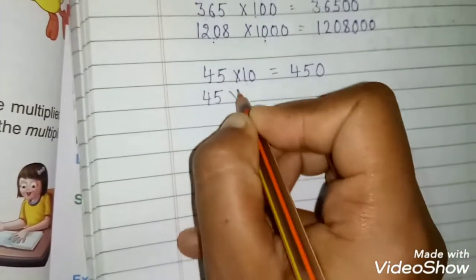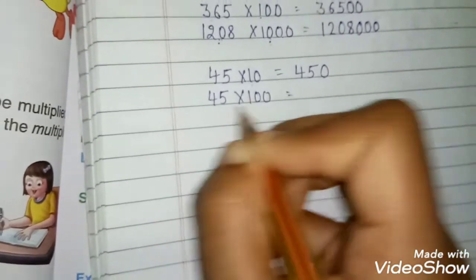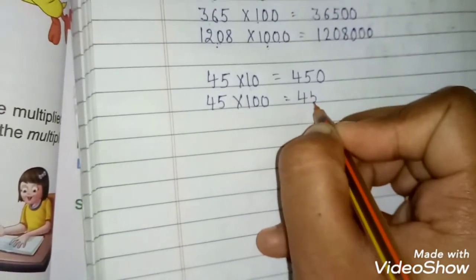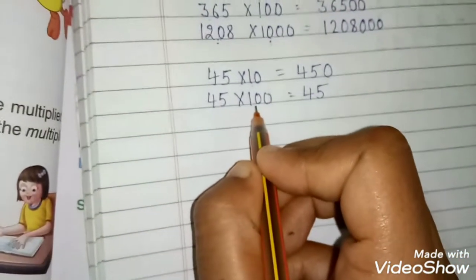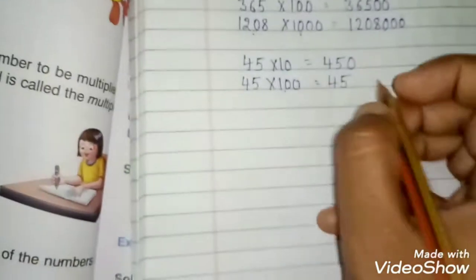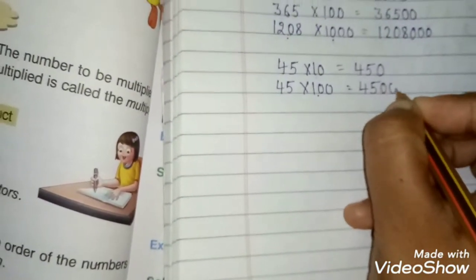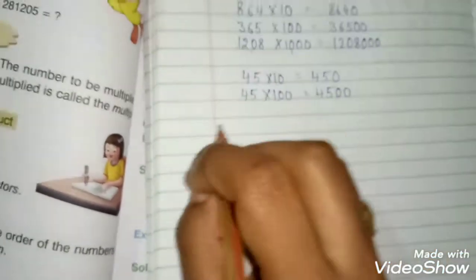Then 45 multiply by 100. Write the digit as it is. Then here two zeros are there. You will write two zeros at the right of your number.